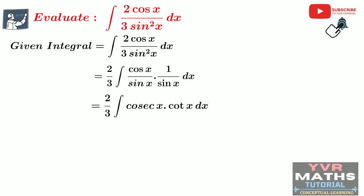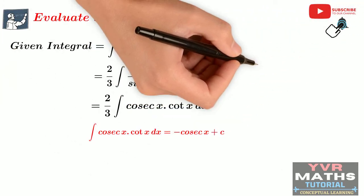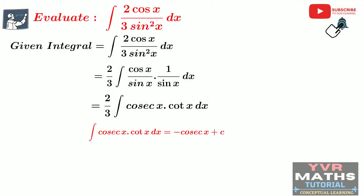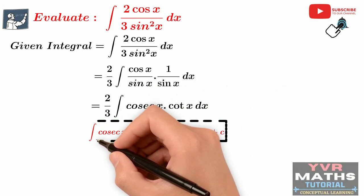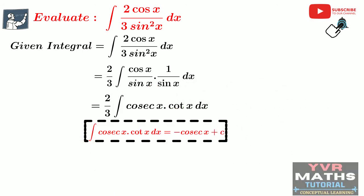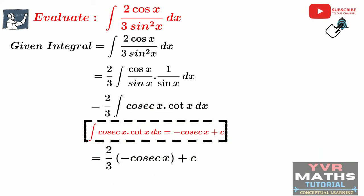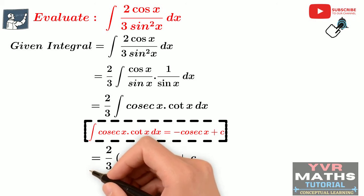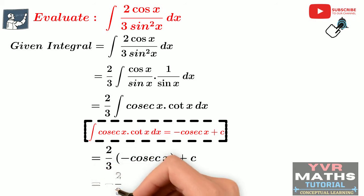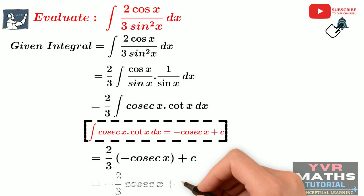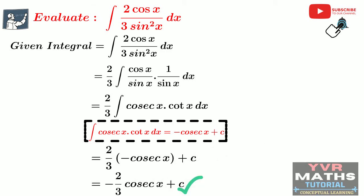Then the next step is 2 by 3 into integral of cot x into cosecant x dx. Now the given integral reduces to a known form. We know the standard integral of cot x into cosecant x dx. So by using this standard integral formula, we get 2 by 3 into minus cosecant x plus c. If we simplify this, the final answer is minus 2 by 3 into cosecant x plus c. This is the final answer for the given integral. I hope you understand.